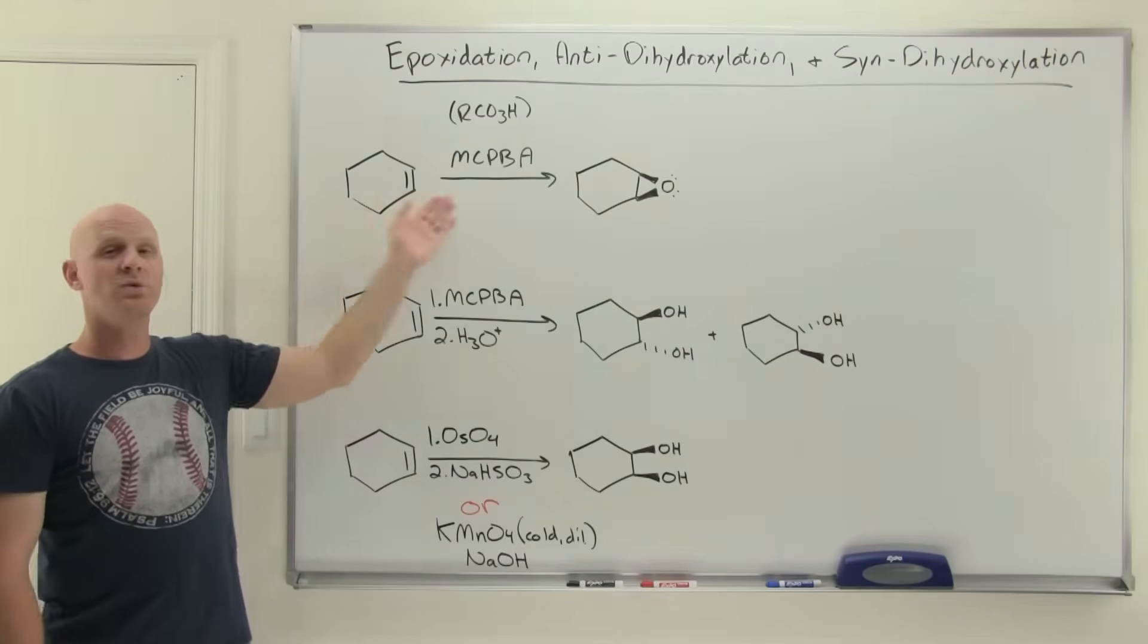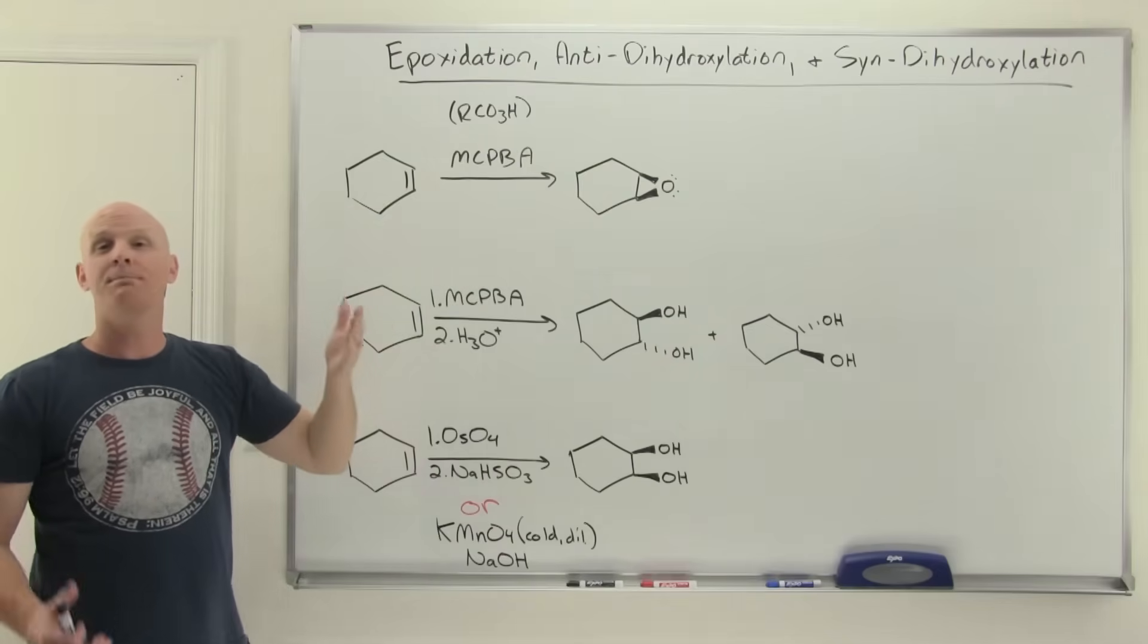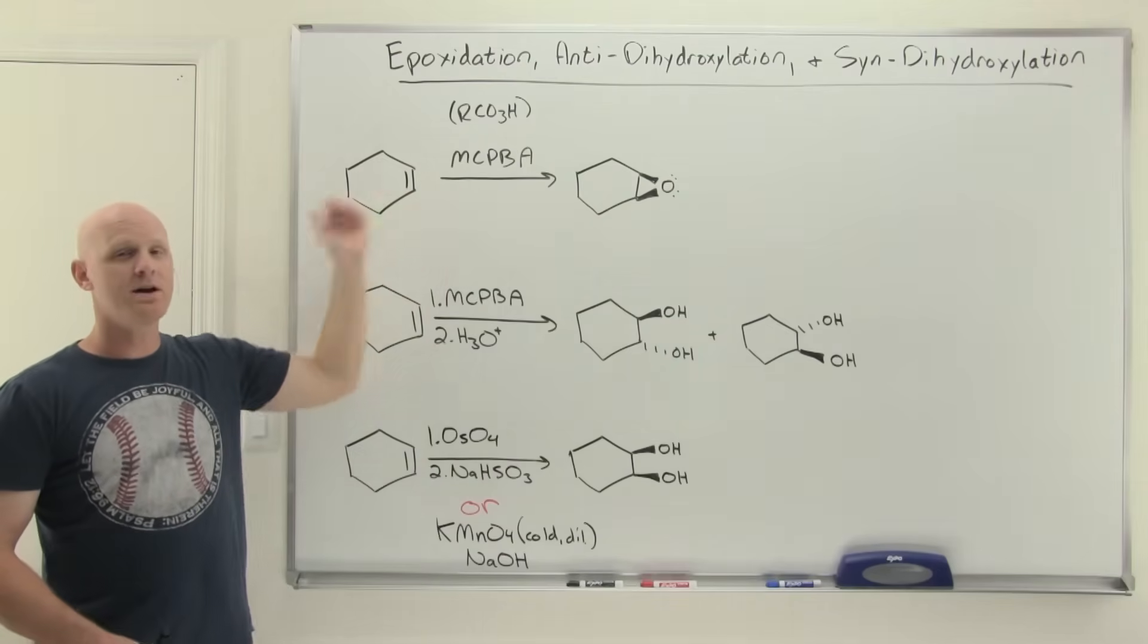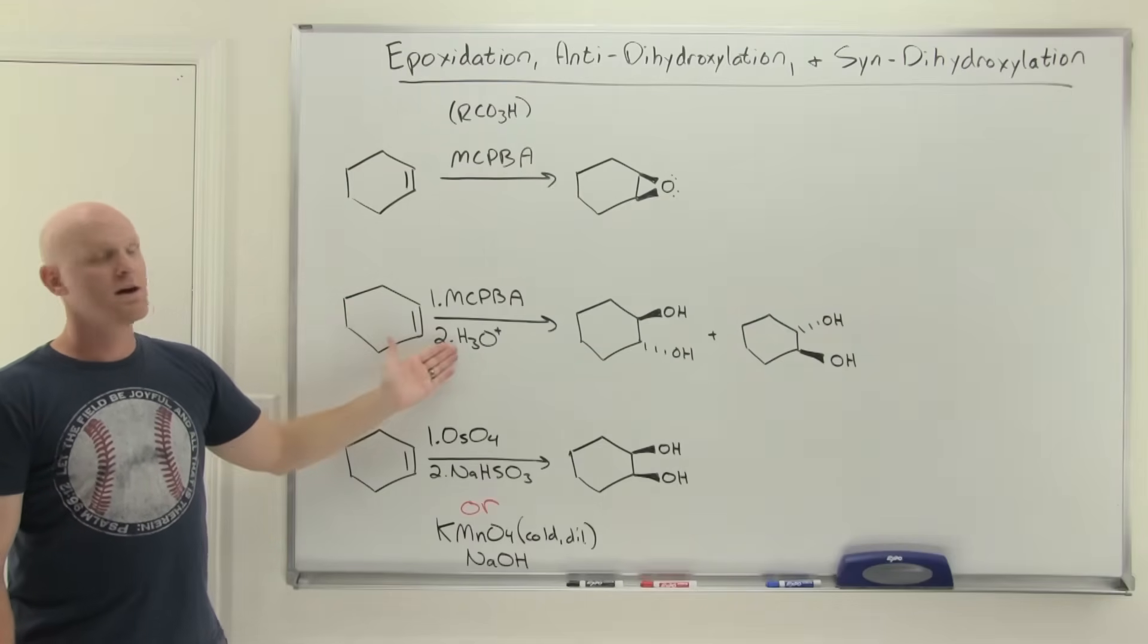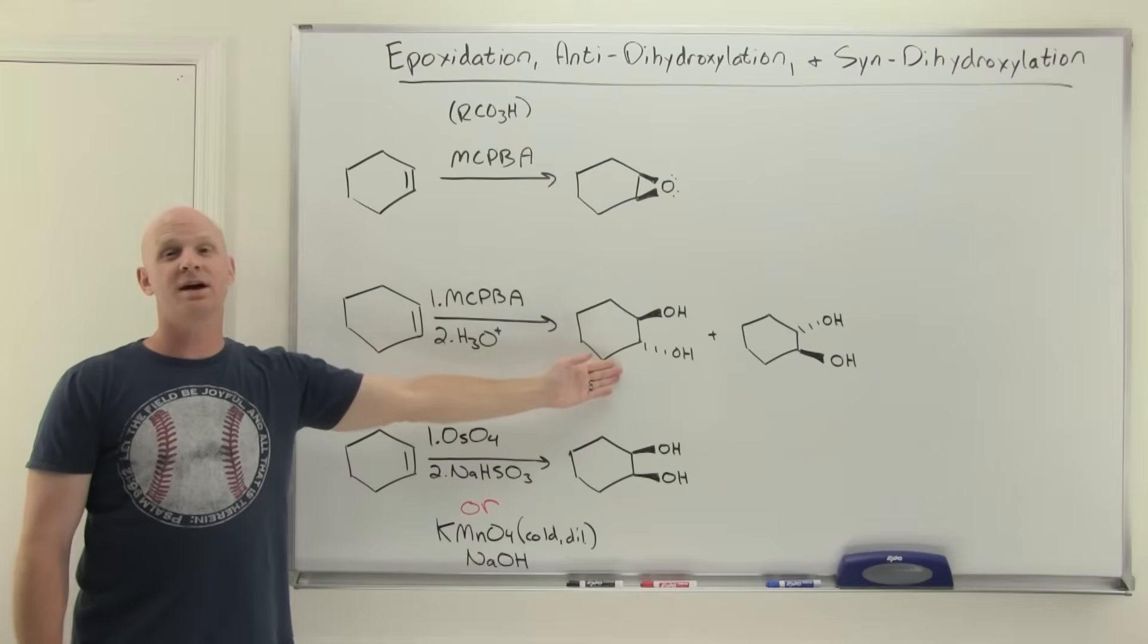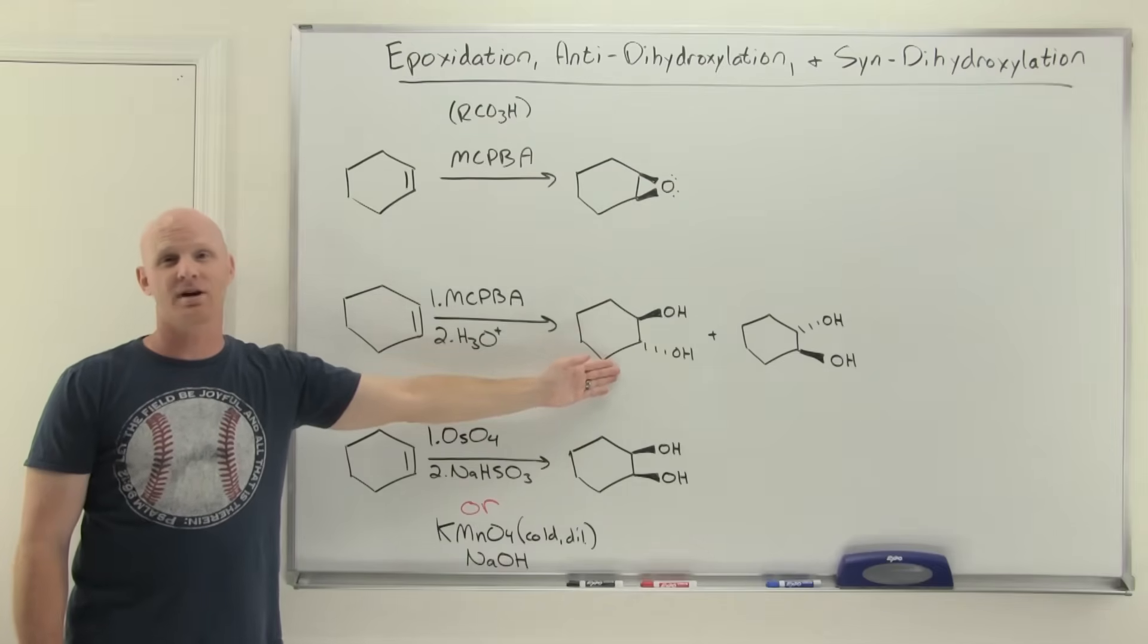We'll find out we can convert an alkene into an epoxide with a peracid or peroxyacid, MCPBA, which is the most famous example. We can also then open up that epoxide by following up with H3O+, which will hydrolyze it, leading to anti-dihydroxylation.